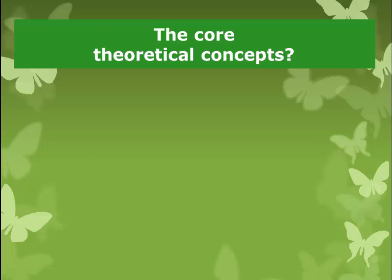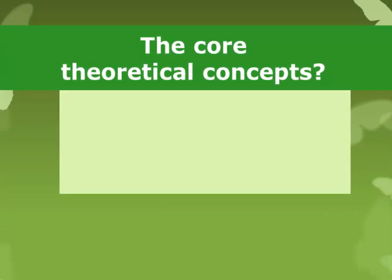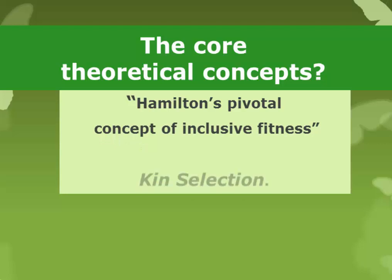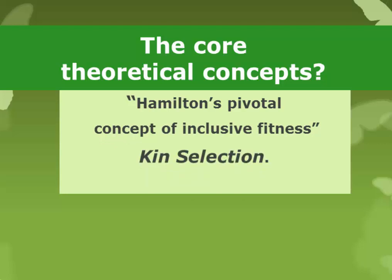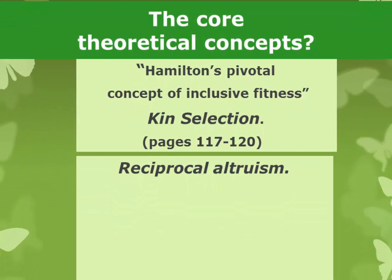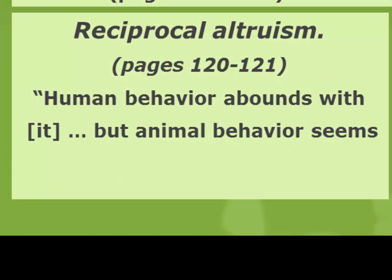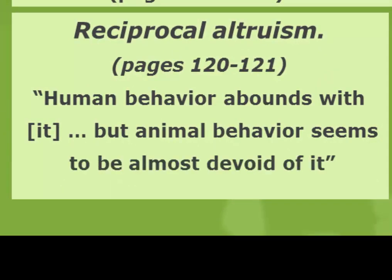Among the core theoretical concepts discussed in sociobiology, we find Hamilton's concept of inclusive fitness and kin selection. You'll find one of the sharper, clearer discussions of inclusive fitness in Hamilton's social universe on pages 117 to 120 of Wilson's Sociobiology. He also discusses reciprocal altruism right after that, but he noted that while human behavior abounded with examples of reciprocal altruism, it was difficult to find examples of animal behavior, and that has continued to be the case in more recent studies.